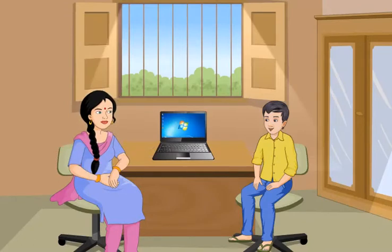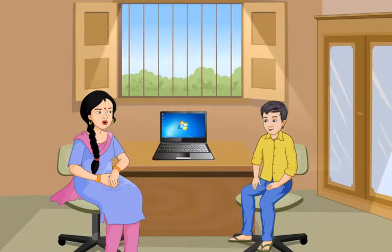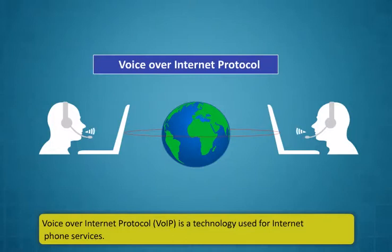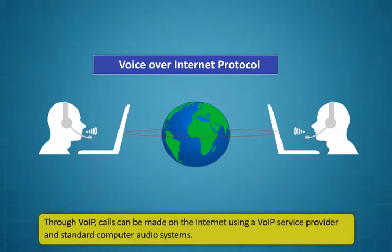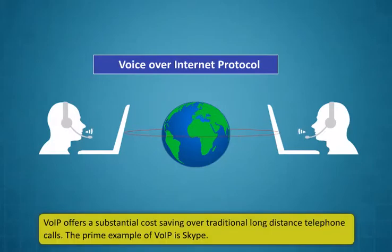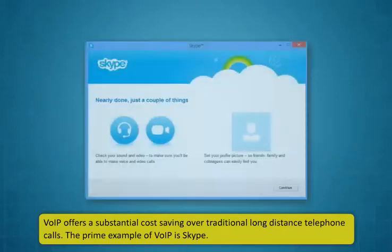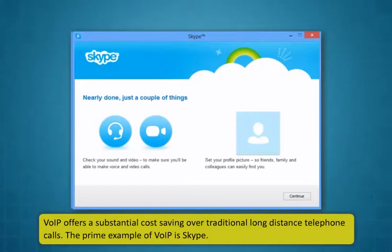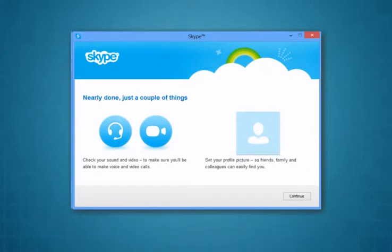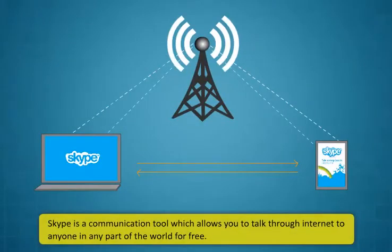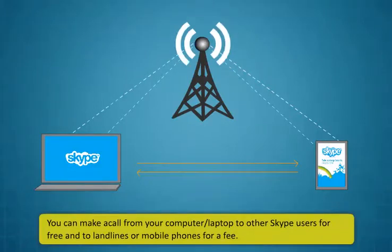There are various interesting ways through which you can use the internet. One of them is that you can also send voicemails or use the internet as a mobile phone. Yes Didi, that's so exciting! There are services that make internet telephone possible. Voice over Internet Protocol (VoIP) is a technology used for internet phone services. Through VoIP, calls can be made on the internet using a VoIP service provider and standard computer audio systems. VoIP offers a substantial cost saving over traditional long-distance telephone calls. The primary example of VoIP is Skype.